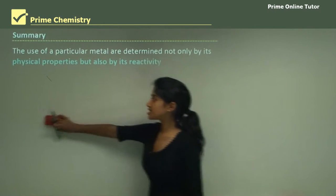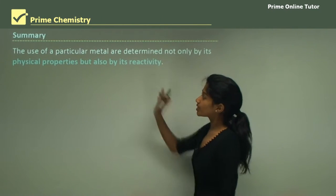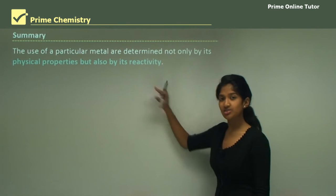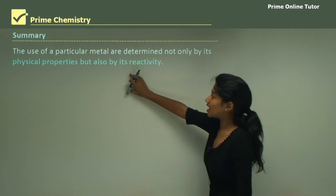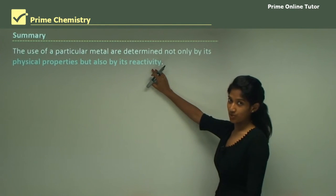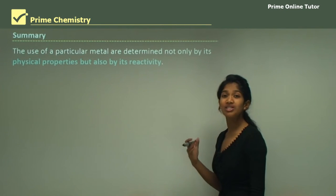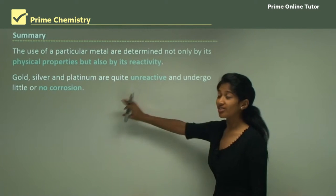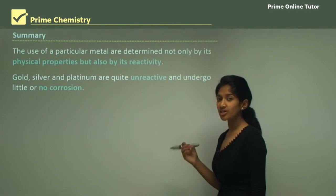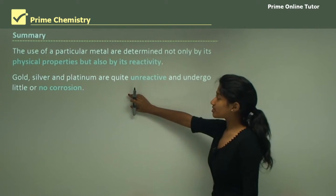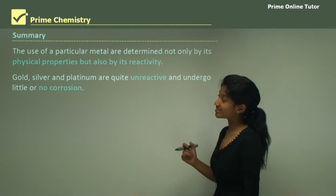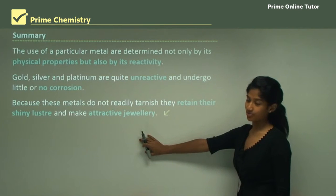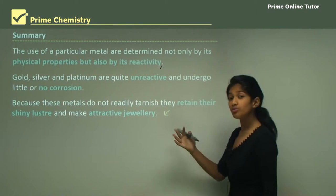The use of a particular metal is determined not only by its physical properties but also by its reactivity. For example, gold is very unreactive and therefore used mainly for jewellery. Gold, silver, and platinum are all unreactive — they do not undergo corrosion, making them corrosion-resistant and visually appealing. Because these metals do not readily tarnish, they retain their shiny luster.